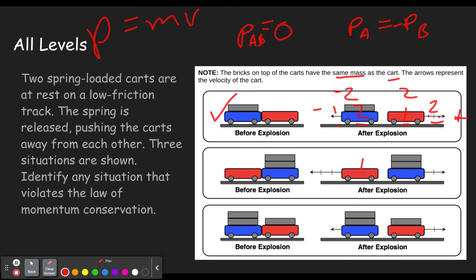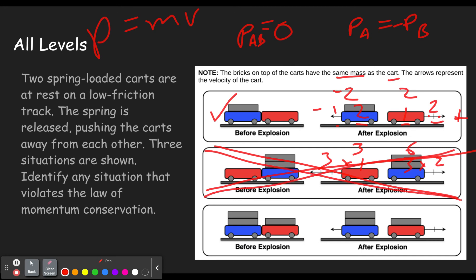Here we have a mass of one and a mass of three, with a velocity of three and a velocity of two. Three times one gives us three, and three times two gives us six. Momentum has not been conserved — that could not happen. Either the red cart would need to be going a velocity of six, or the blue cart would need to be going a velocity of one — either one of those would make them match up. This could not happen because three does not equal six.